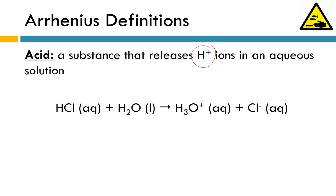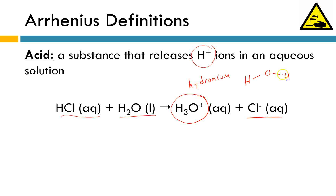There are a couple different ways we can represent this. Sometimes you'll see it written where we have HCl aqueous combining with liquid water, and we get this H3O+ ion and a chloride anion. The name of this H3O+ ion is hydronium. You can think of a hydronium ion as really just being a water molecule that has picked up an additional H+. The negatively charged electrons on the oxygen are going to be attracted to that positively charged hydrogen ion, also called a proton. You can picture the electrons capturing that hydrogen and making the hydronium ion.